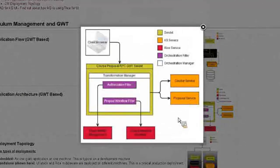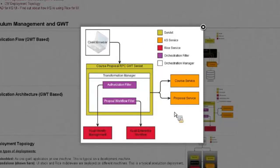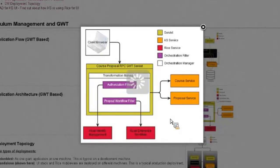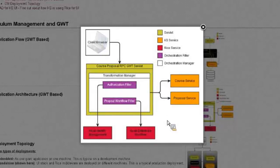Another diagram is shown — a higher-level view showing different layers, where the browser is making calls. This is an example of a course proposal being processed in CM. The browser on submit is calling the course proposal RPC GWT servlet. There are filters being applied — though these have now changed to be at the service layer rather than the GWT server layer, and are handled through the service decorators.